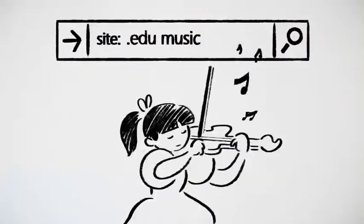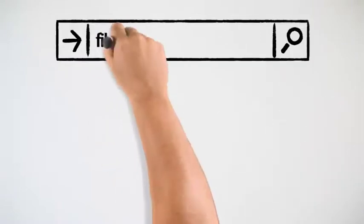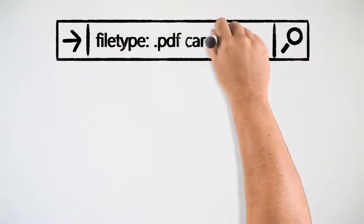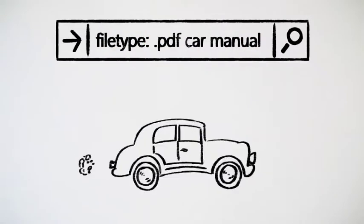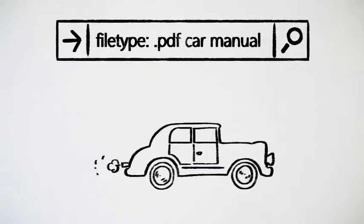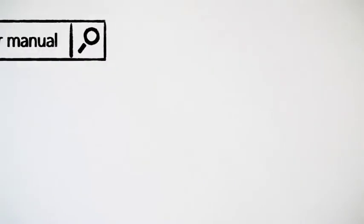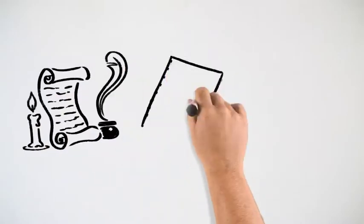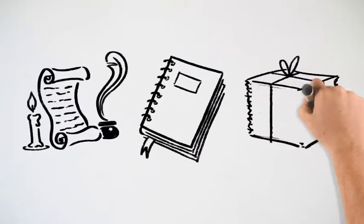By adding file type to your search, you can find specific types of documents, like Adobe PDFs or Microsoft Word files, which is helpful when you're looking for particular documents like full-length transcripts or articles from research journals.